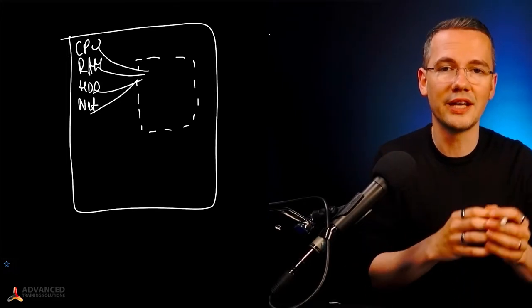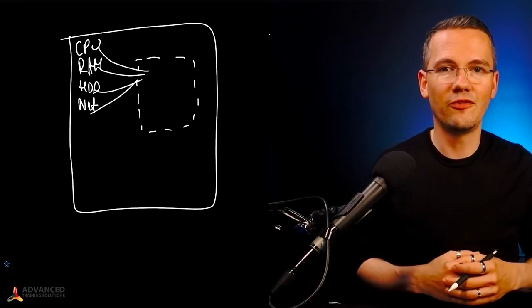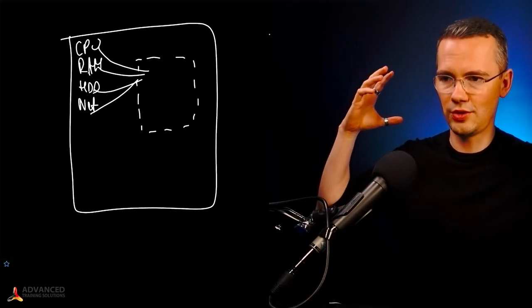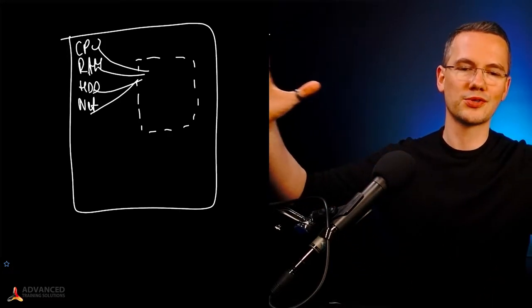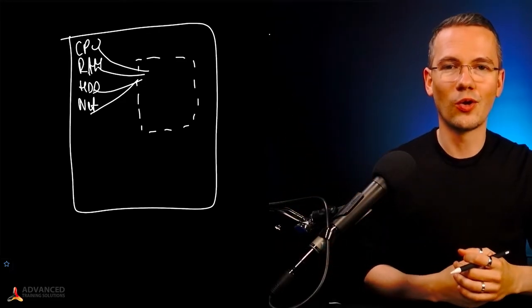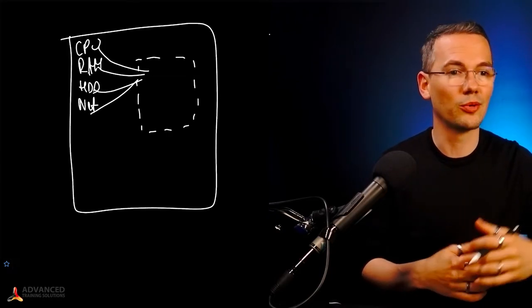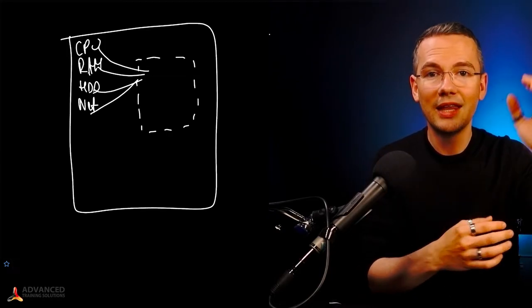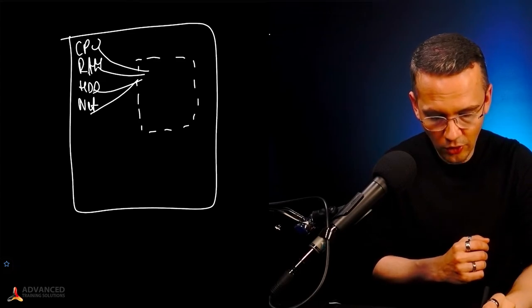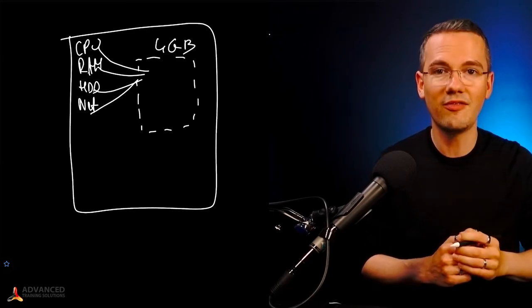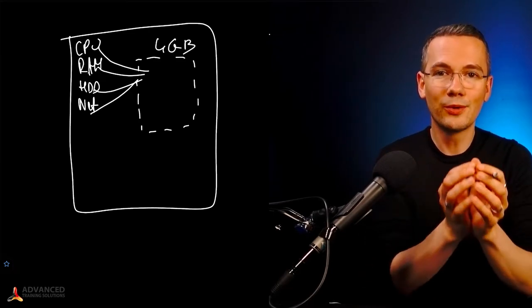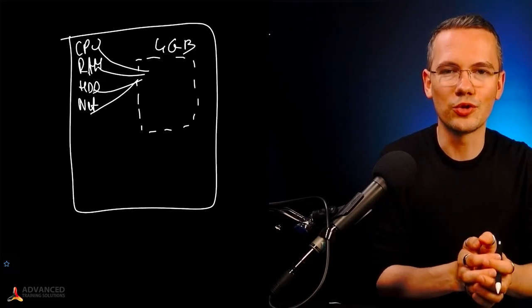So we'll virtualize those physical devices. Instead of seeing that you have just one very powerful processor with multiple different cores and so on, you'll have just a small processor with a limited number of cores. For example, instead of having 64 gigs of RAM, this virtual machine will see that it only has four gigs of RAM available. And this way, this is exactly what we call virtualization.